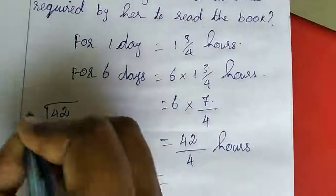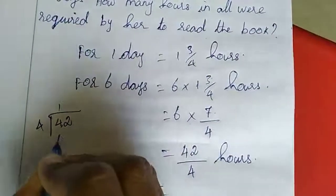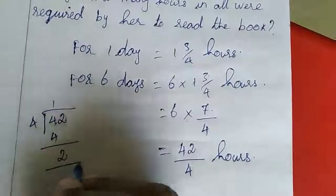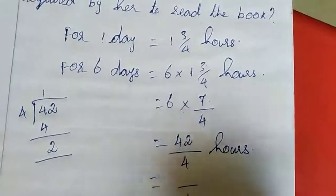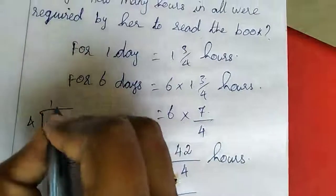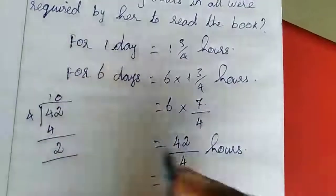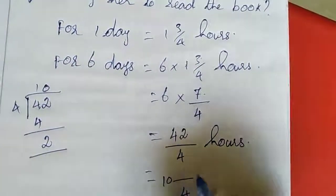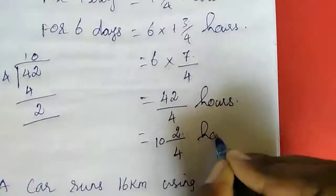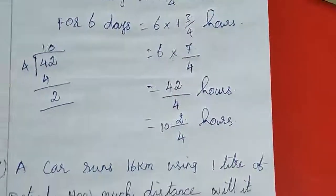If you want, you can change. 4 table: 1 times 4 is 4, remainder 2. We are getting 10 equal to 10 and 2 hours.